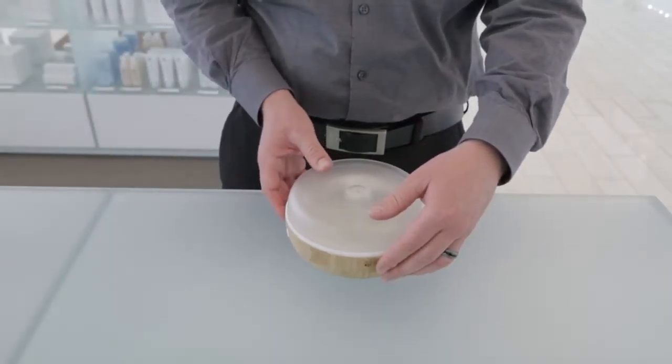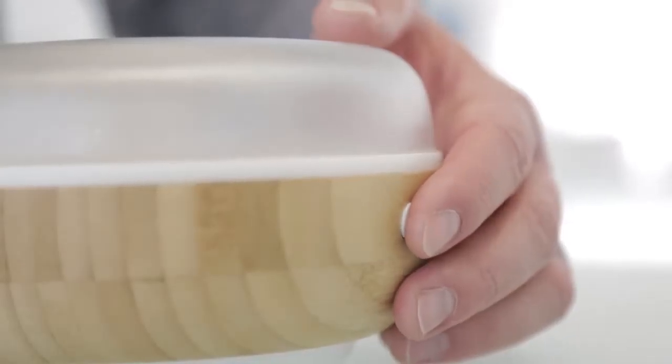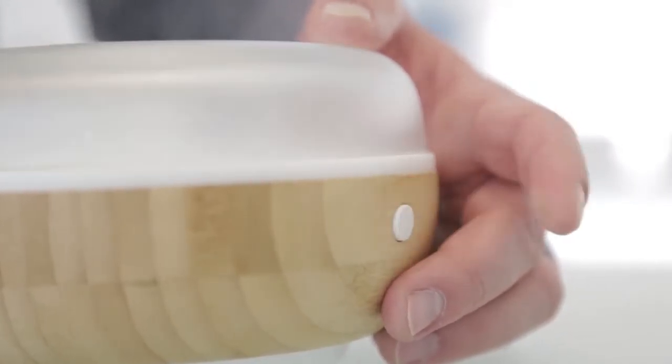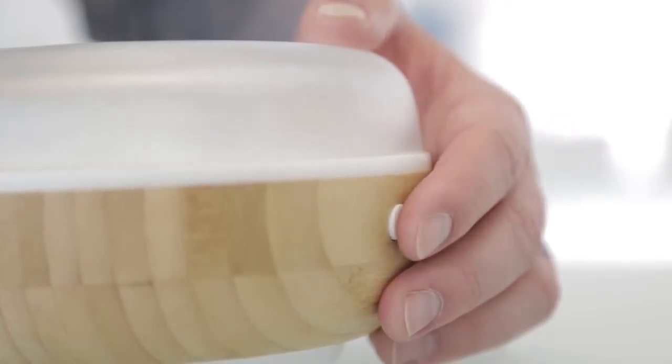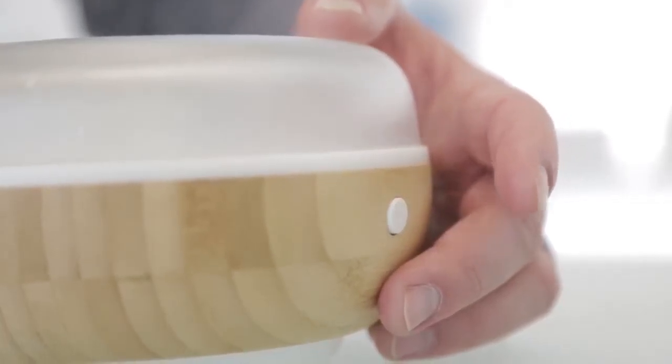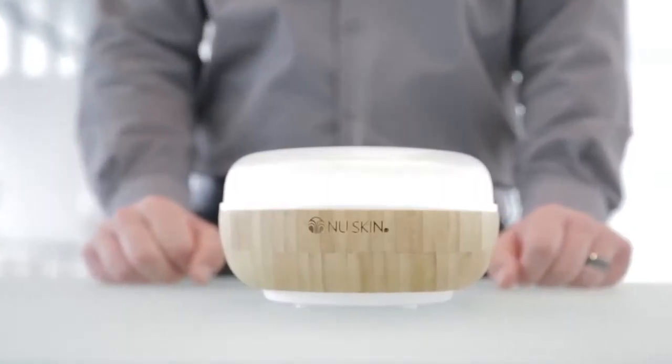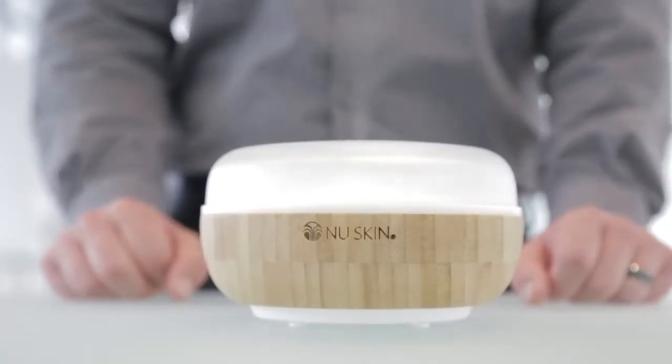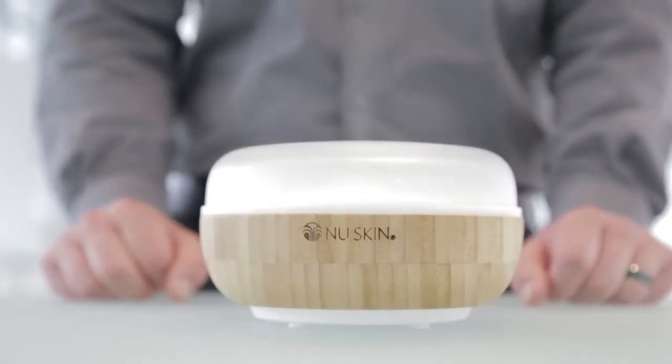Press the power button on the base once for mist, twice for bright light and mist, and three times for dim light and mist, and four times to turn the diffuser off. The diffuser will run for up to four hours of continual use and will automatically turn off once it runs out of water.